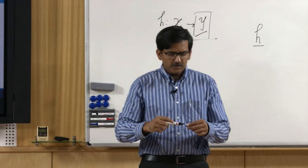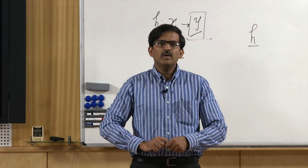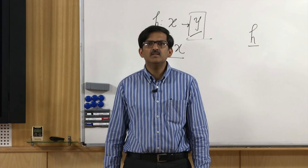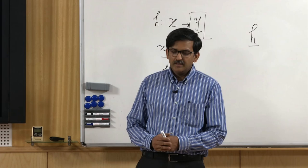The answer to the next query will seem to be coming from the space Y equiprobably. If we assume this property on h then we are following the random oracle model. And we will discuss the problems of preimage, second preimage, and collision with respect to this random oracle model.